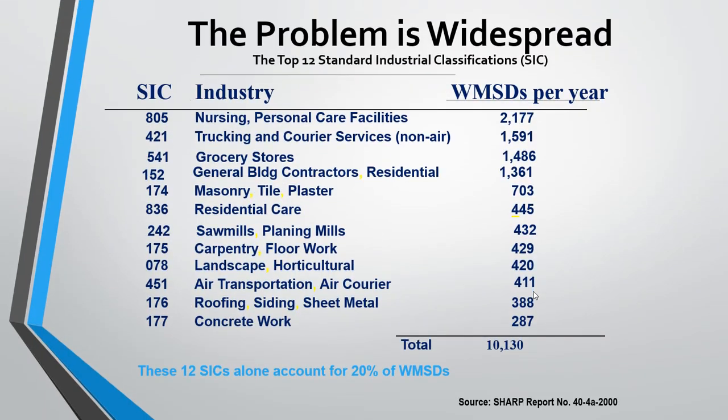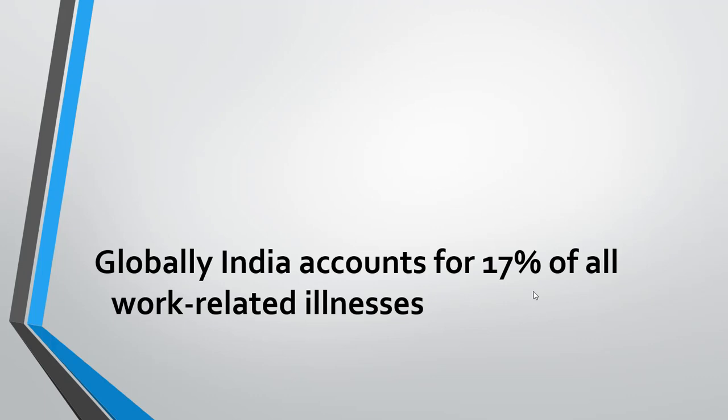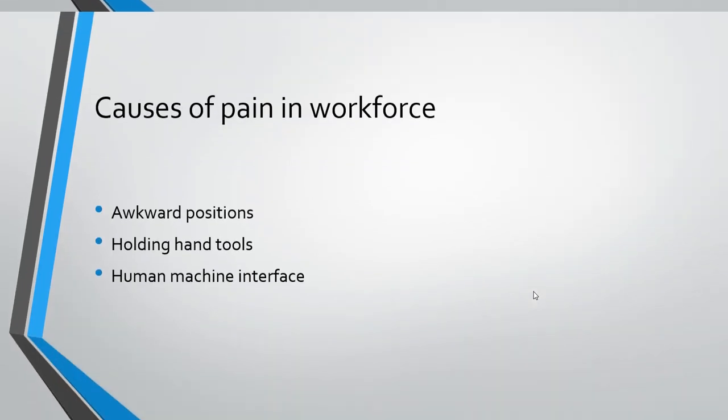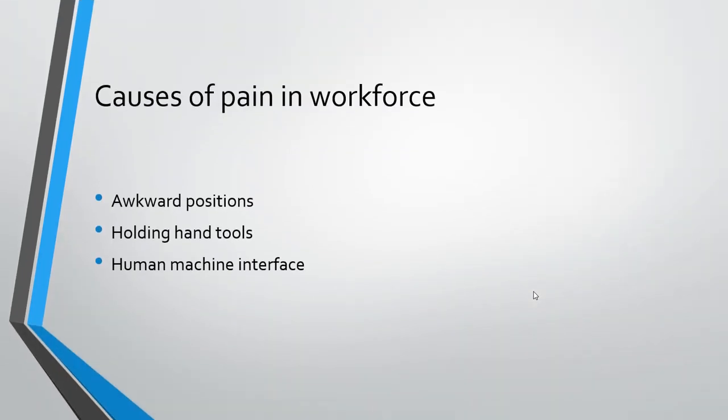This screen shows the report about the most common causes of pain in the workforce, which range from healthcare to masonry. Interestingly, with better designs there is not much report on problems arising with human-machine interface. The rest of the job profiles show that the workforce is always in awkward positions and holding hand tools. Globally, India accounts for 17% of work-related illnesses. The main causes of pain in the workforce are limited to awkward positions, holding of hand tools, and human-machine interface.